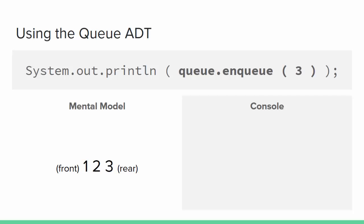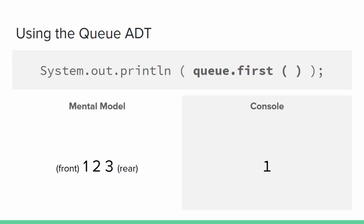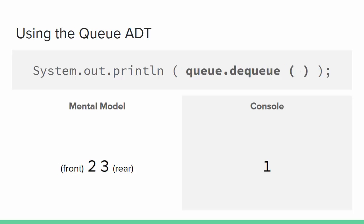When we add the second element it also goes to the rear, and a call to dequeue or first would still return 1 because that's the first element in and first element out. When we add 3, it also goes at the end and our line is just getting longer — size is now 3. If we look at the first element using the first method, we see that 1 is at the front of the queue. As we remove elements from the front: the first call to dequeue returns 1, the second returns 2, and the third removes 3. Size is back to 0 and isEmpty is true.